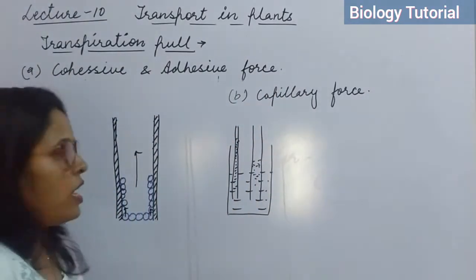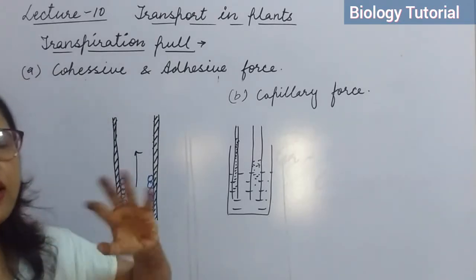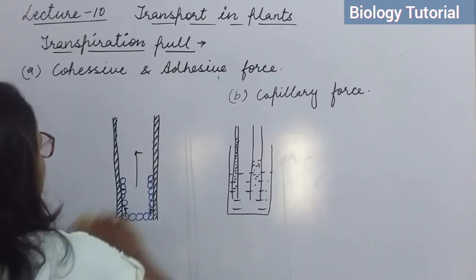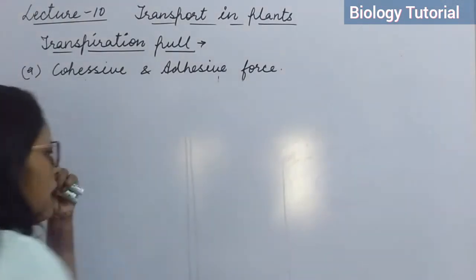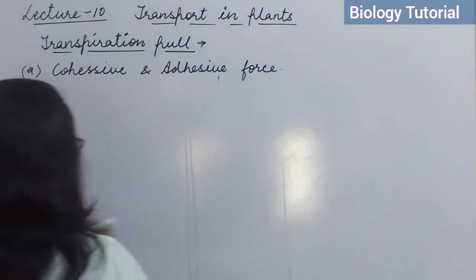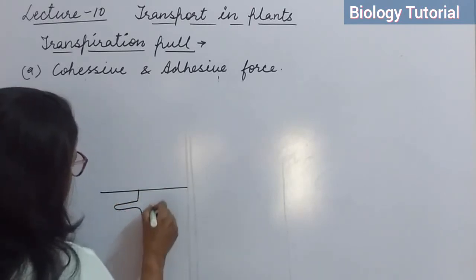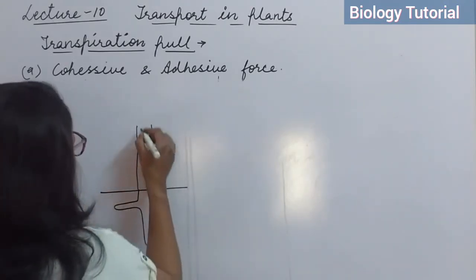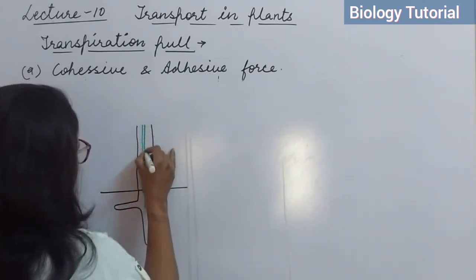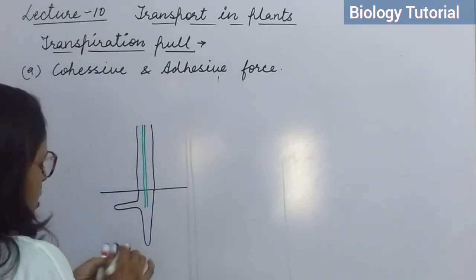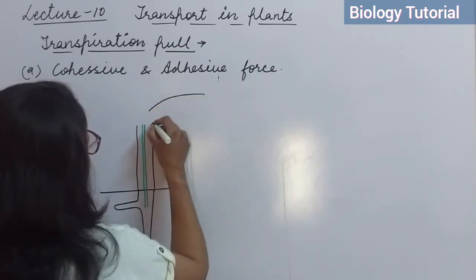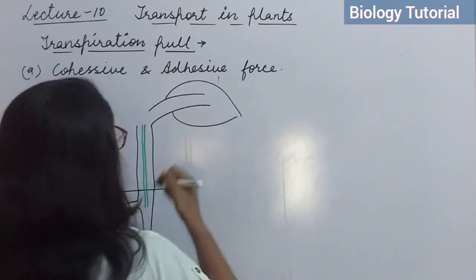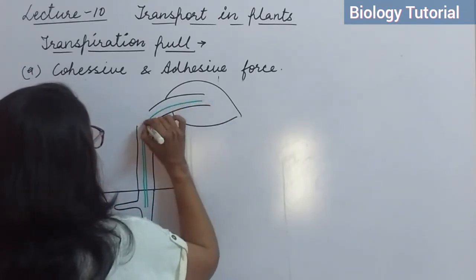In plants, the suction pressure is developed by the process of transpiration. Consider a plant with its root at the bottom and stem above. A very thin xylem vessel runs through the stem. The leaf of the plant is at the top, and the xylem vessel continues into the leaf. With the help of cohesive and adhesive forces, water rises upward in the xylem vessel, creating a continuous water column from root to leaf.